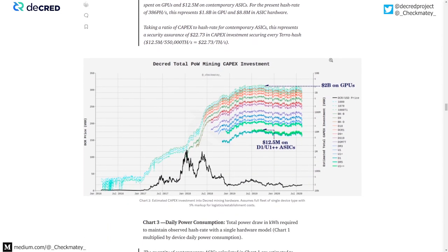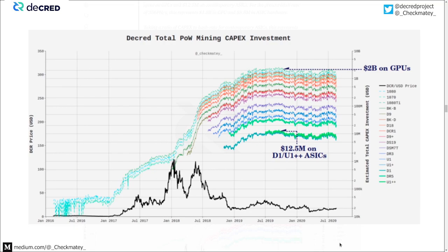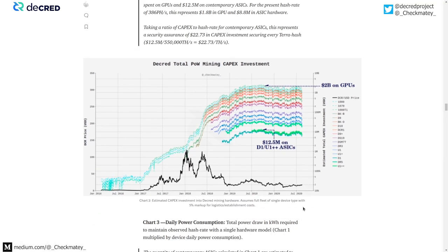Looking at CapEx: how much would need to be spent to acquire those device counts? About $2 billion on GPUs versus about $12.5 million on ASICs. This is an unforgeable barrier — anyone wanting to attack the Decred network needs to come in with $12.5 million worth of silicon just to start, before OPEX and logistics. A 5% markup on all device expenses is layered in to account for site development, logistics, shipping, and other CapEx elements. For daily power consumption, the transition from GPUs to ASICs represents a move from gigawatt-hours to megawatt-hours per day — and the Bitcoin network consumes about 134x more power than the Decred network.